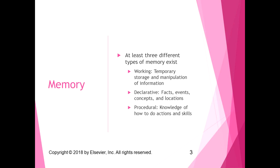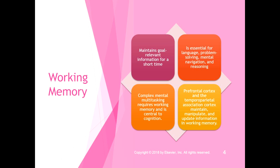Working memory maintains goal-relevant information for a short period of time. It's essential for language, problem-solving, mental navigation, and reasoning. Having a conversation requires remembering what you just said and what the other person said. It's important for complex mental multitasking and is central to cognition. The prefrontal cortex and the temporoparietal association cortex maintain, manipulate, and update information in working memory.